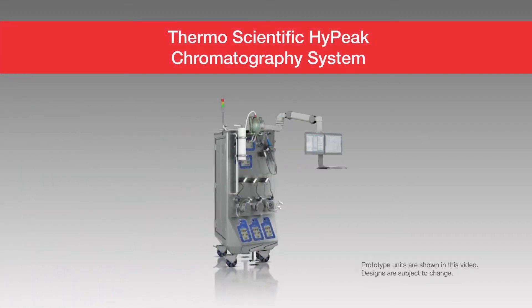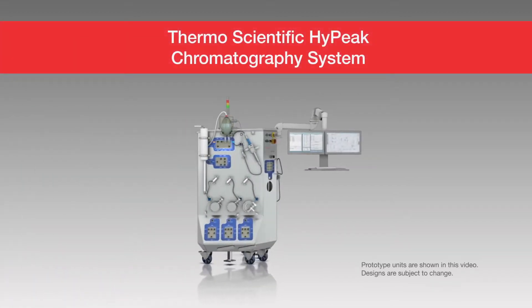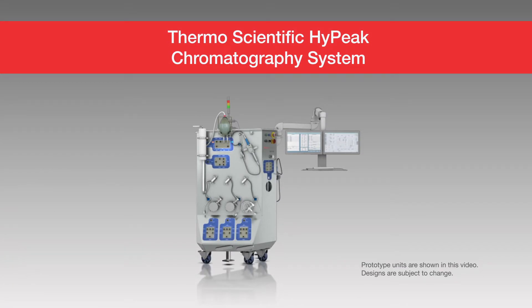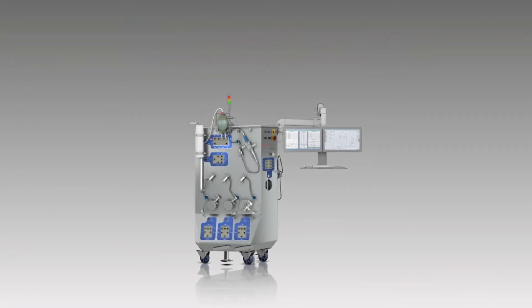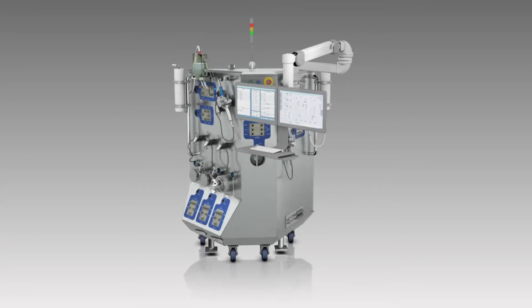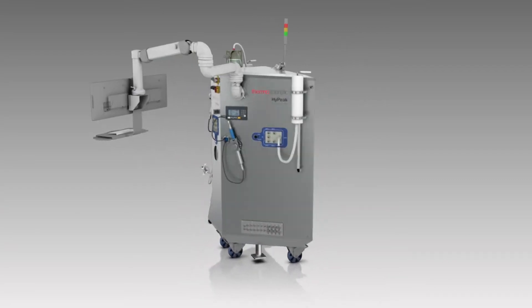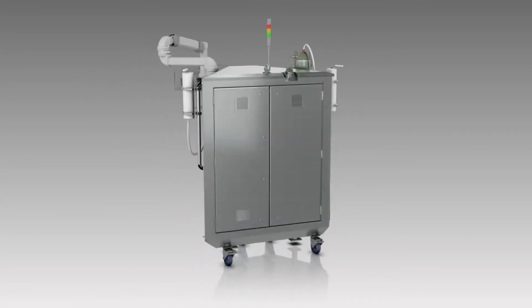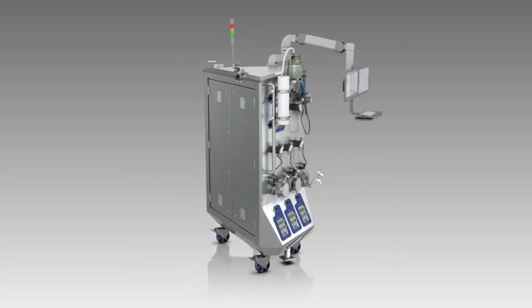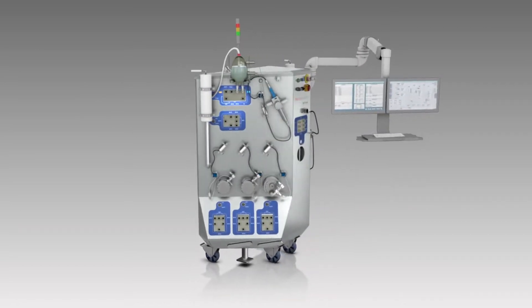Introducing the Thermoscientific High Peak Chromatography System, the latest innovation for downstream bioprocessing. A complete hardware, software, and single-use system that helps meet the demands of modern downstream bioprocessing with isocratic, gradient, and in-line dilution processing capability.